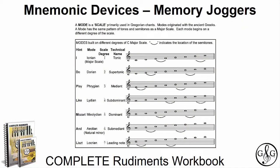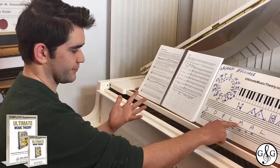Mnemonic devices are memory jogger techniques to help you improve your ability to remember something — a memory technique to help your brain better encode and recall important information. In the Complete Rudiments Workbook, you are learning about modes. A mode is a scale with the same pattern of tones and semitones as a major scale, with each mode beginning on a different scale degree. The UMT hint sentence is: 'I do play like Mozart chart and list' to remember the order and names of the modes.